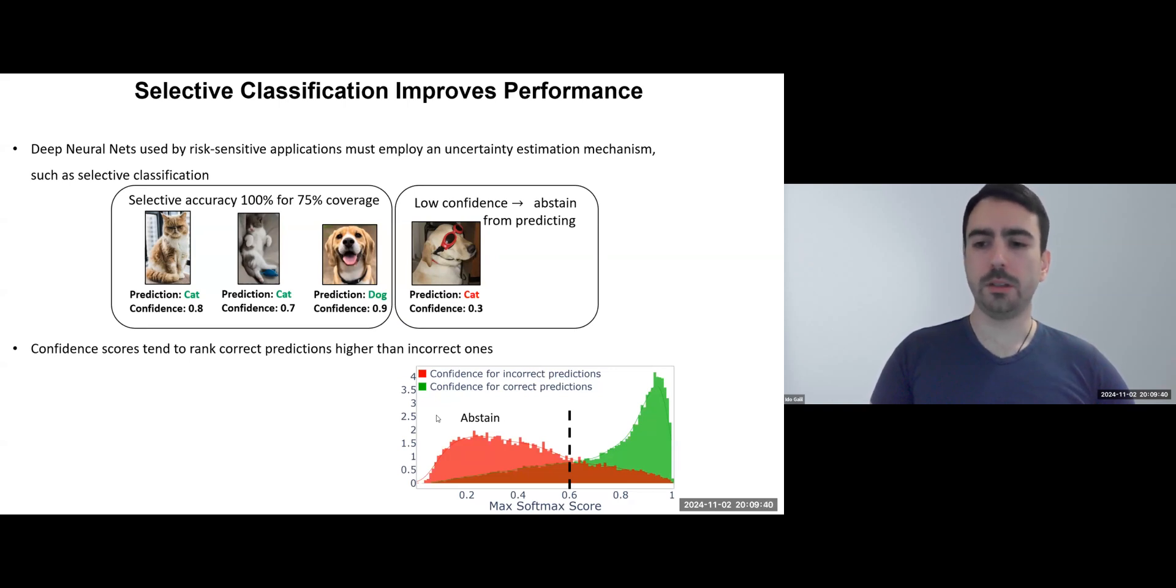In our example, this stops the model from misclassifying the dog with the goggles as a cat, boosting selective accuracy to 100% with 75% coverage.